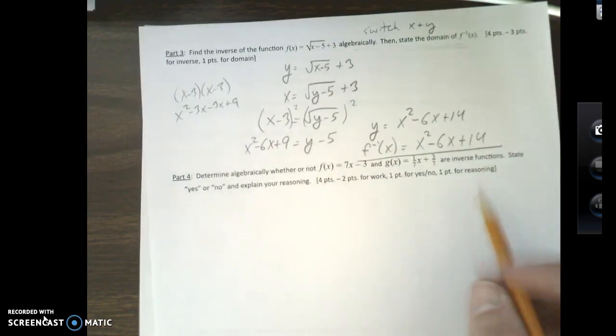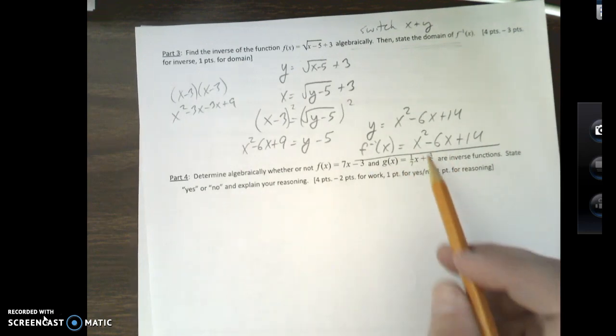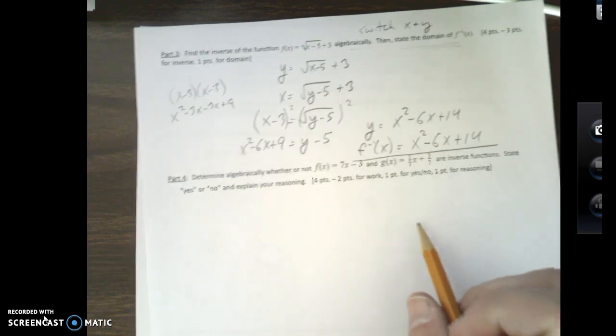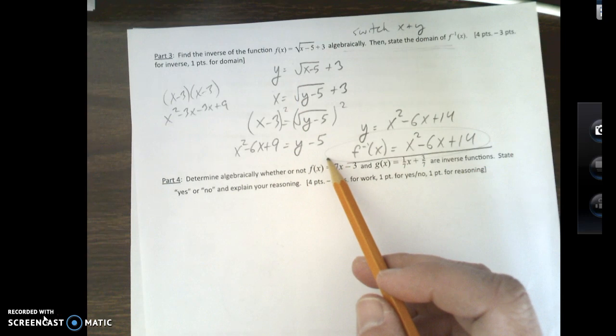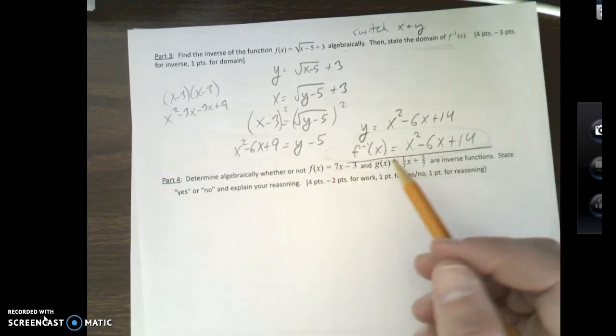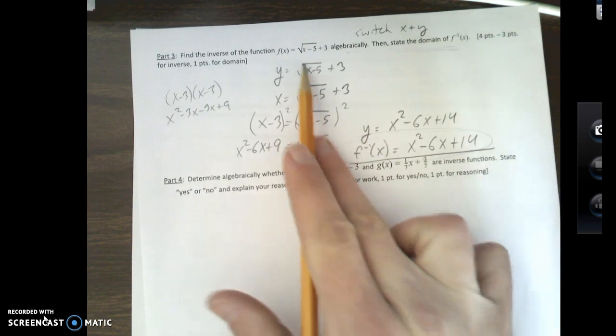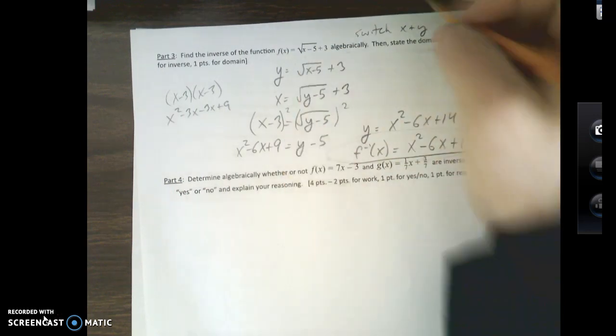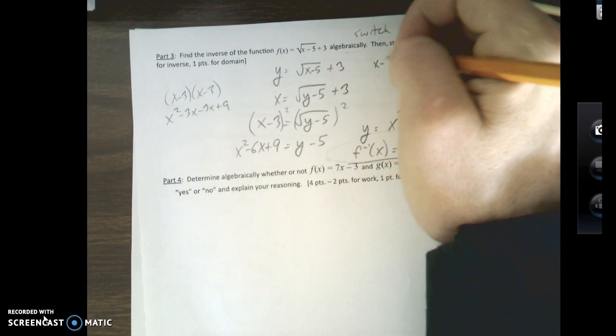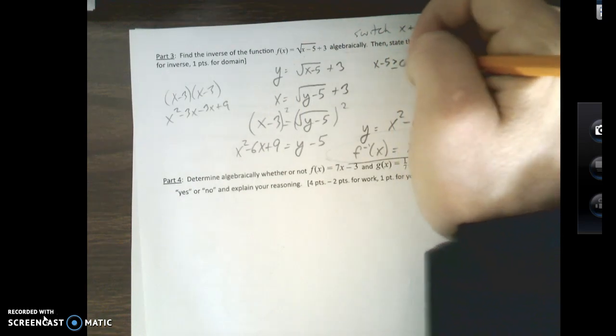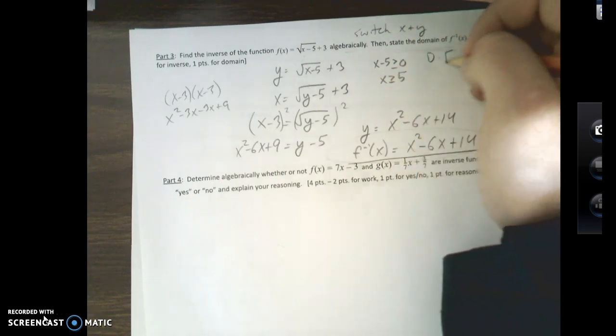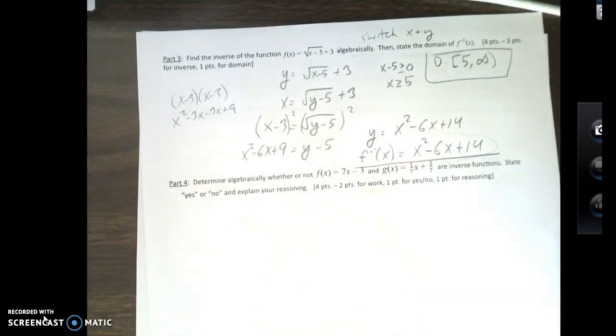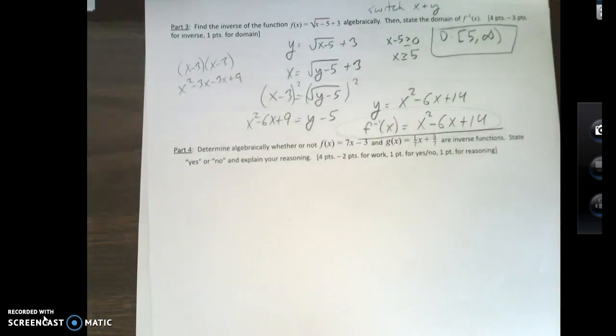Okay. Now, if I want to state the domain of my inverse, okay, what I must also take into consideration is the original one. So, for this, there's no even power roots, and there's no x's in my denominators. But, look at your original one. I do have an even power root. So, the domain has to take into consideration x minus 5 must be greater than or equal to 0. If I solve that, x must be greater than or equal to 5. Bracket 5 to infinity. And we're good. Okay. All good.